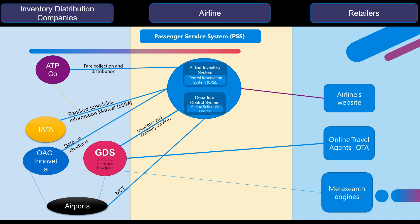The International Air Transport Association (IATA) publishes the SSIM — that is the Standard Schedules Information Manual document. This document defines standards on how different airlines should exchange airline schedules and data on aircraft types, airports and terminals, and time zones. Companies like OAG and Innovata are global travel data providers. They keep and maintain flight databases and provide aviation statistics, analytics, and data on schedules.